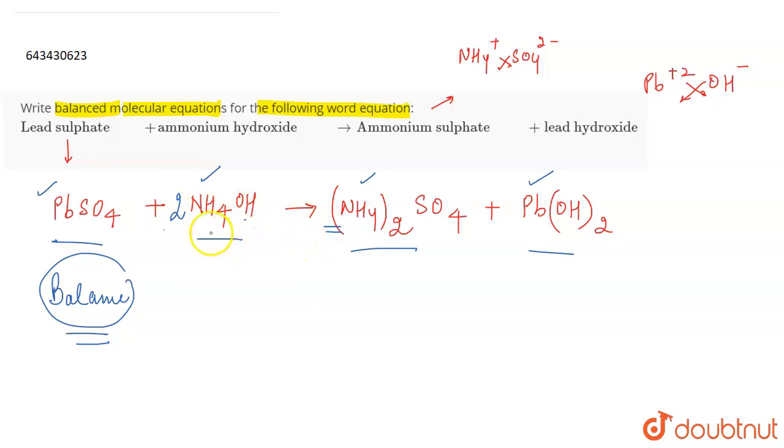Then we have two OH now because we have added two here. This means that we have two OH here, which means that OH is also balanced. Now we have one sulfate here, SO4 and one sulfate here.